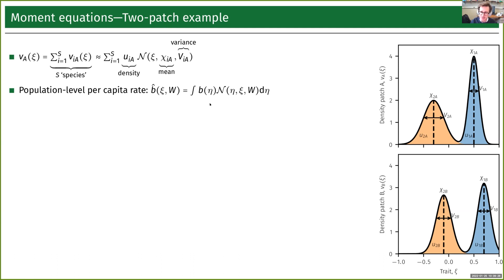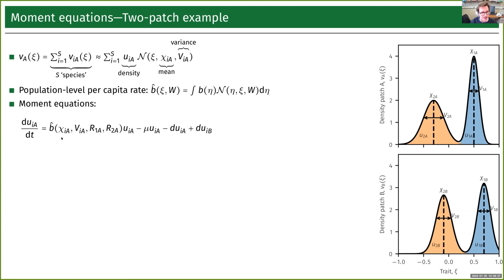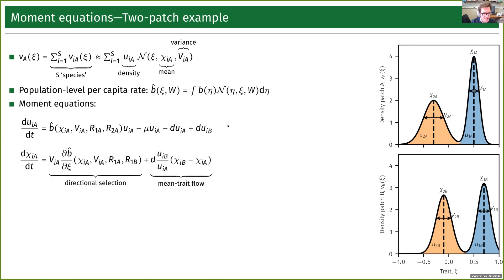We introduce notation for what happens at the population level. The birth rate is for a single trait value, and the hatted version is for the entire population with mean psi and variance b. We derive differential equations for these three moments. For the total density, we compute the population-level birth rate, then have the mortality rate and dispersal. For the mean trait, we get a directional selection term depending on the first derivative of the population-level birth rate — moving the peak back and forth depending on selection, multiplied by the variance. Then we have mean trait flow between the two patches: if the means differ, the peaks pull on each other to converge, weighted by relative densities.